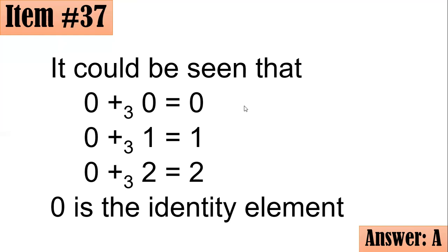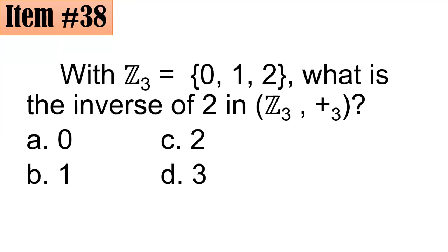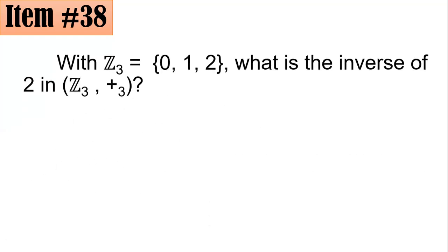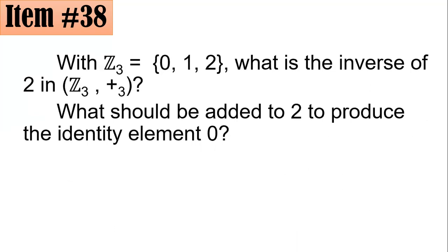Number 38. The same is given, but this time, what is inverse of 2 in this group? Is it 0, 1, 2, or 3? Take note that there are only 3 elements. Those elements are 0, 1, and 2. So I'm sure D is out of the picture here. And here, what should be added to 2 to produce the identity element 0?